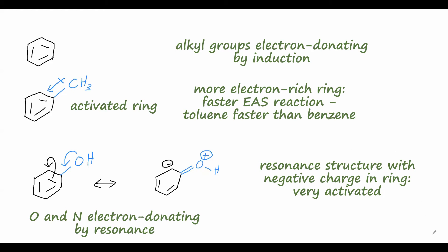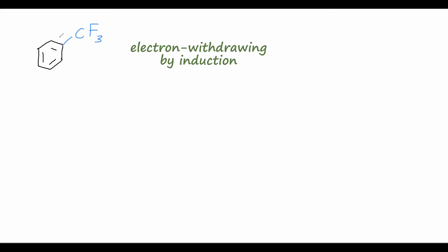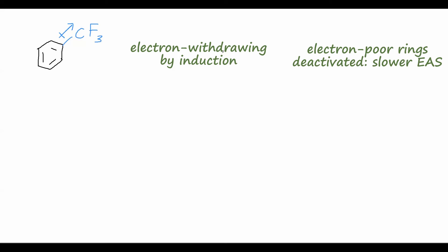What if we consider electron withdrawing groups? We can draw trifluoromethylbenzene, which has a trifluoromethyl group on the benzene ring. Instead of the electron donating effect from a methyl group, we have very electronegative fluorine atoms that withdraw electron density from the ring by induction. We can draw a dipole moment where the negative end points away from the ring. Because electron density is pulled away from the ring, this ring is deactivated towards EAS reactions, so this molecule would react more slowly than benzene.